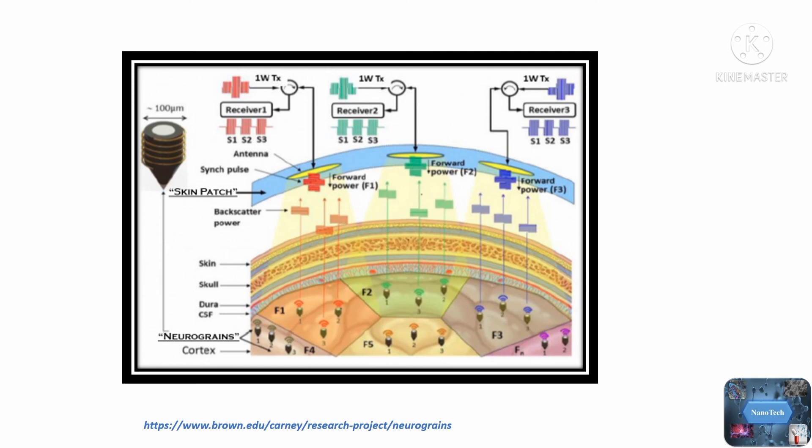The researchers have now stated that they have a working system after testing it on a mouse brain. Because of the small size and surface area of this brain, they were only able to use 48 NeuroGrains, but the system can scale up to 770 nanograins, which is enough to cover a brain like ours.